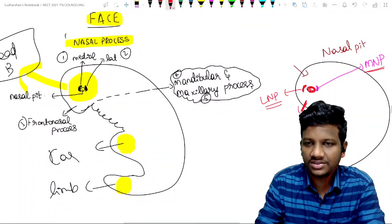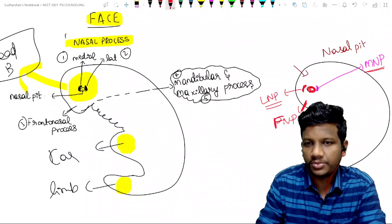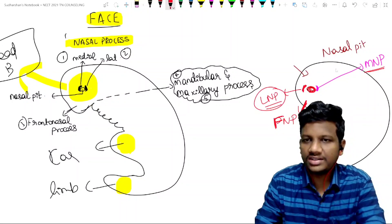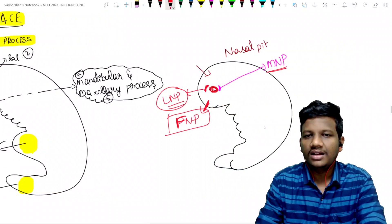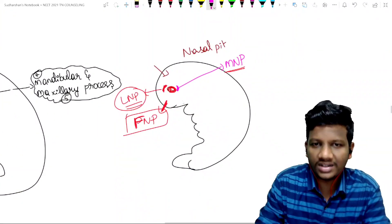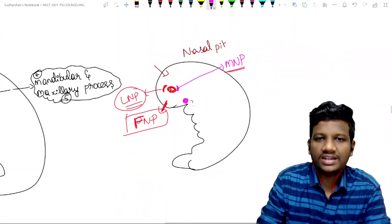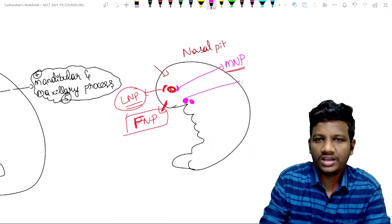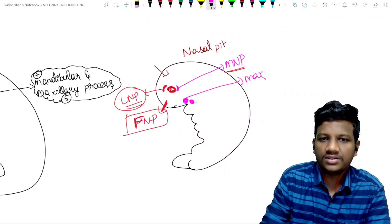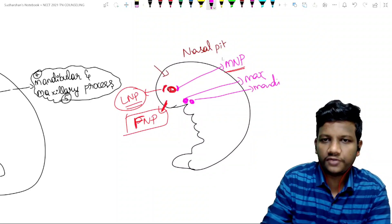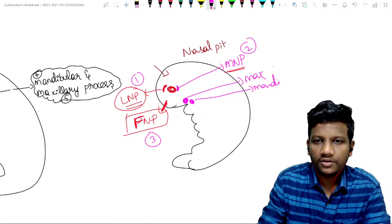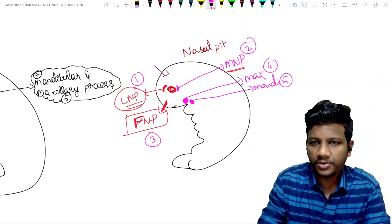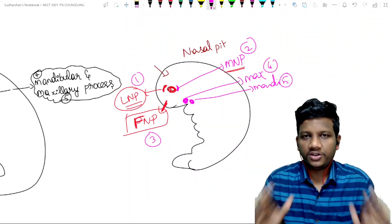Apart from that, this end is called the fronto-nasal process. So already we have seen two processes — lateral nasal and medial nasal — along with the fronto-nasal process. Apart from these three, we have two more: one is the maxillary process and the next one is the mandibular process. These five processes together help in the development of the face.